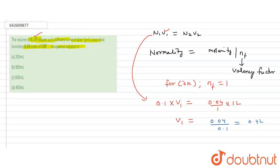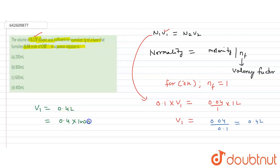The answer options are given in milliliters, so we convert: 0.4 liters × 1000 = 400 mL. Therefore, V₁ = 400 mL. This is the volume required to neutralize one gram of base that furnishes 0.04 mol of hydroxide ion.